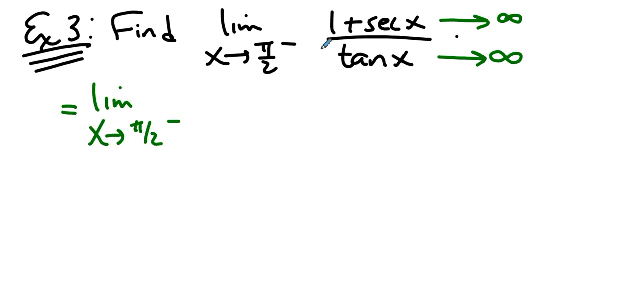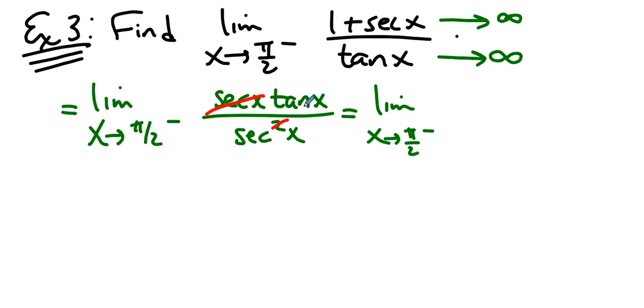And to apply L'Hopital's rule, we take the derivative of the numerator, which you remember from calc 1. This cancels with one of those. And then we ask ourselves what this is. So, this is sine over cosine. This is 1 over cosine. So, we're really dealing with sine x as x approaches pi over 2. And that is 1.